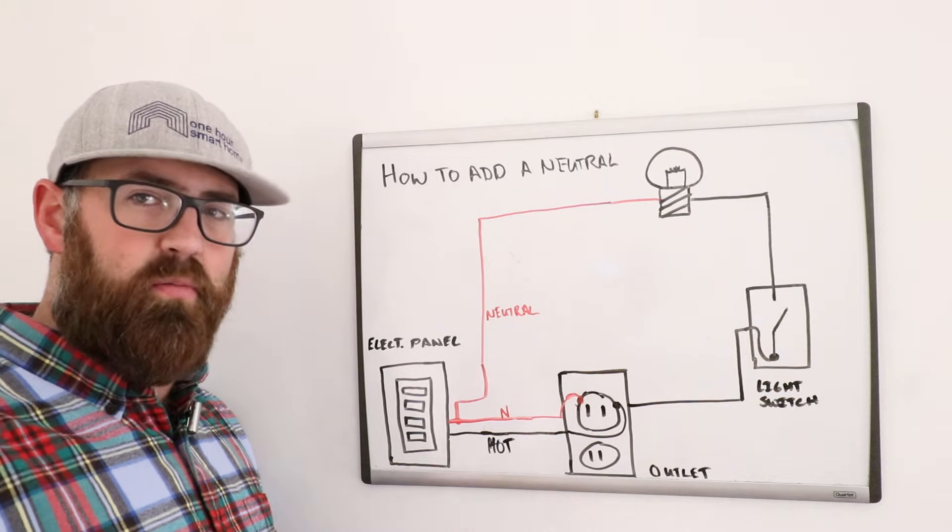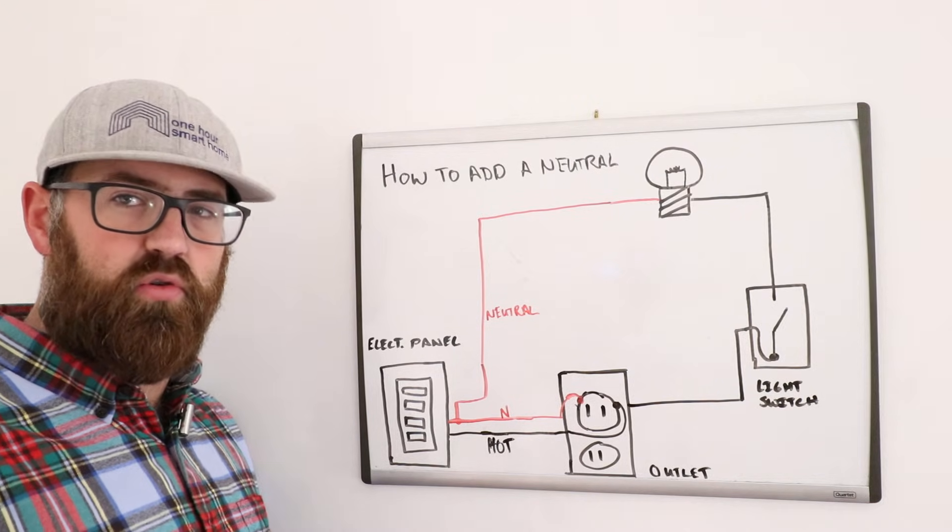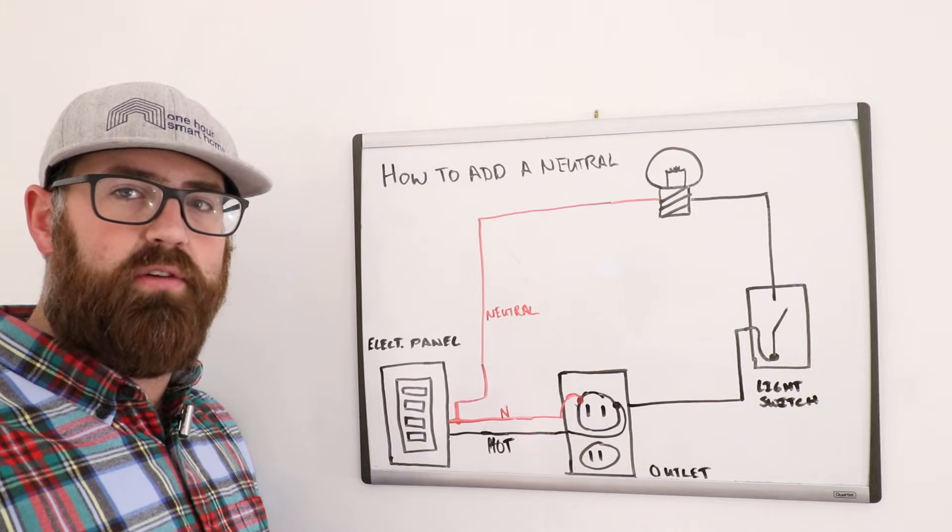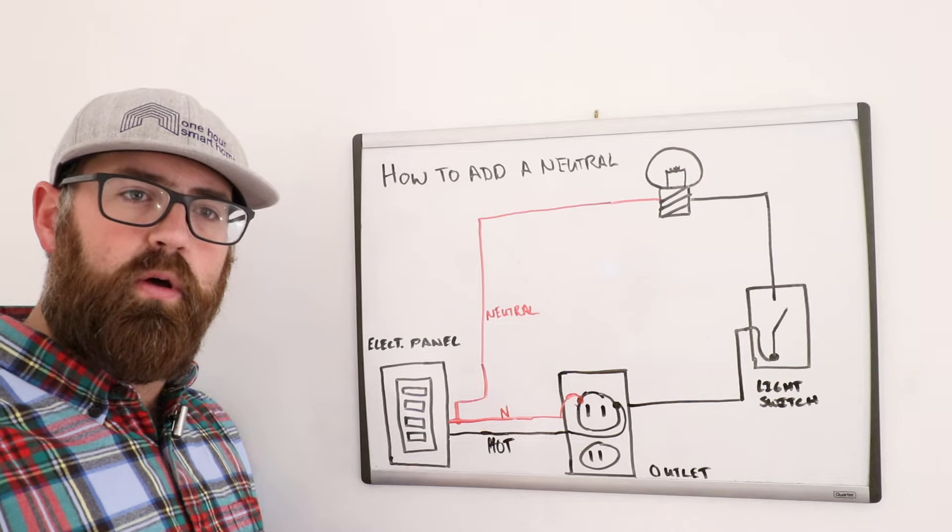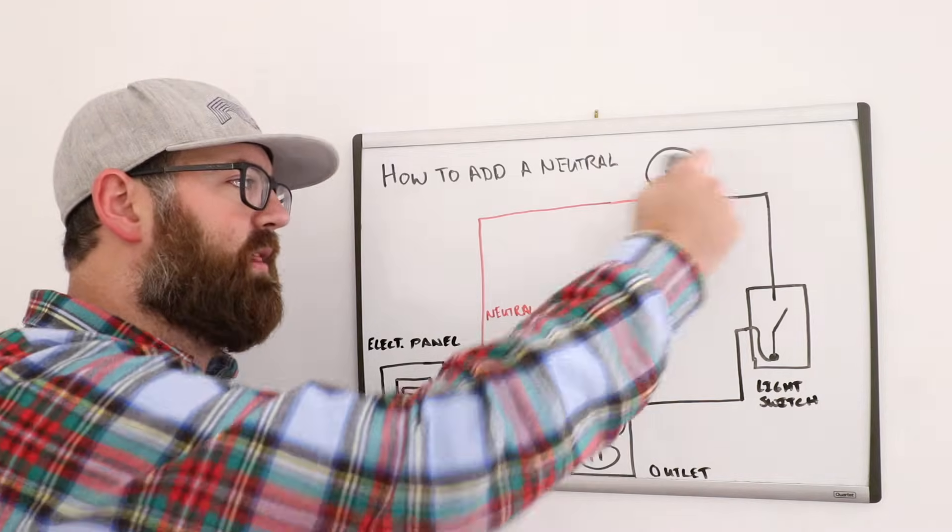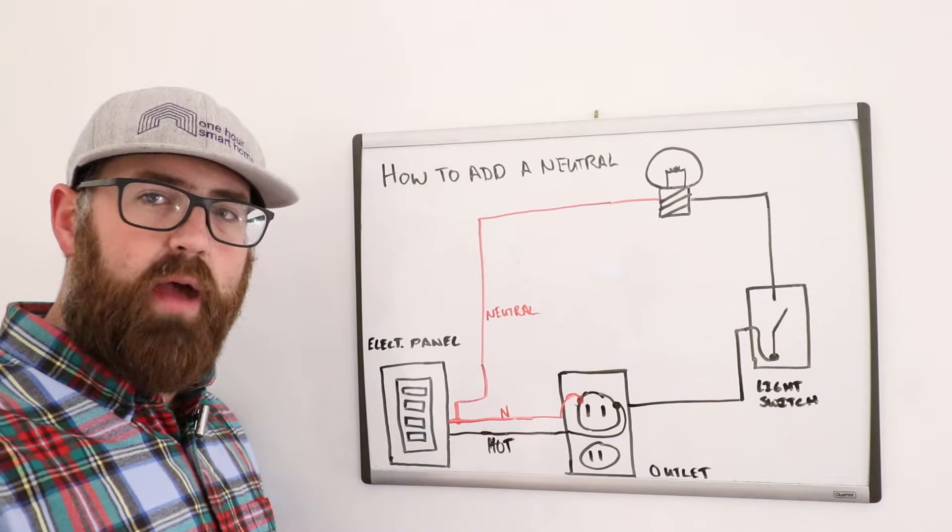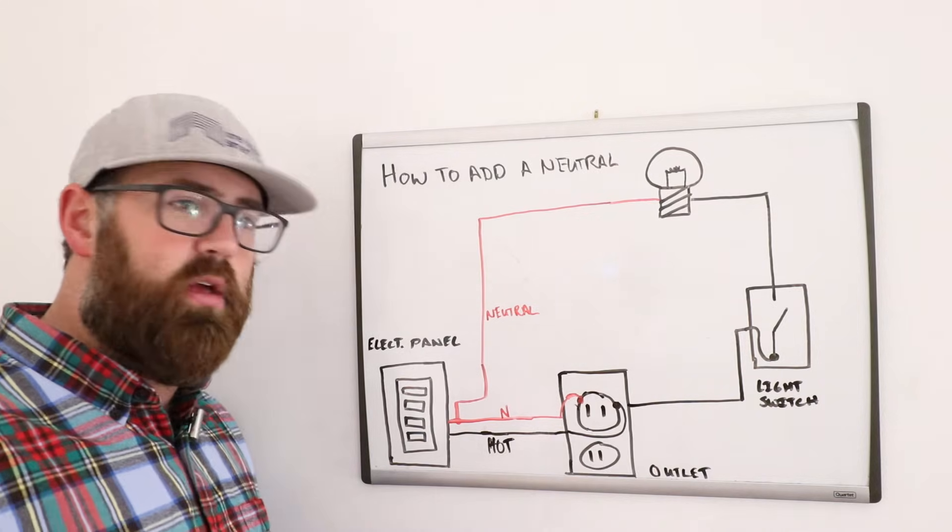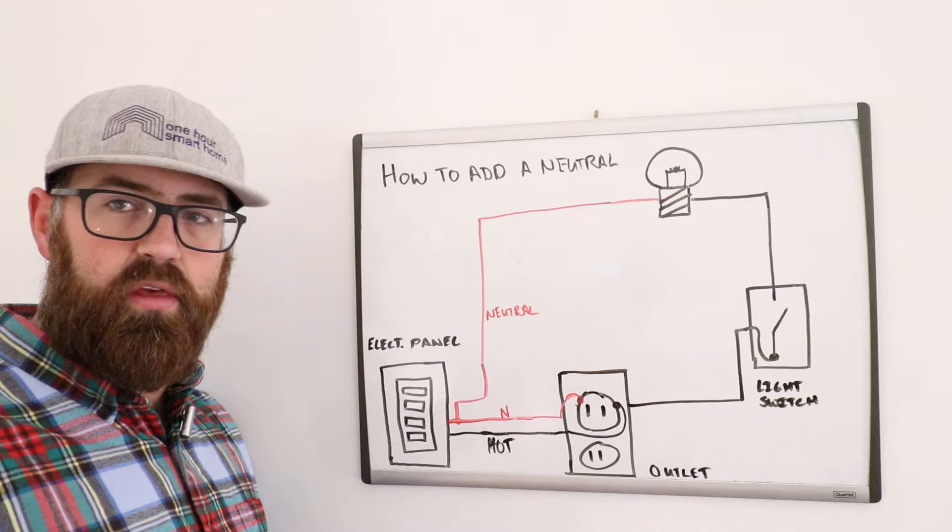Now, there are plenty of light switches that do require a neutral wire for smart lighting. And that's because they use the neutral wire to power the Wi-Fi chip without powering the lighting circuit. So what happens is that Wi-Fi chip is powered because you have a hot and a neutral going to it, and it allows it to communicate with the router.